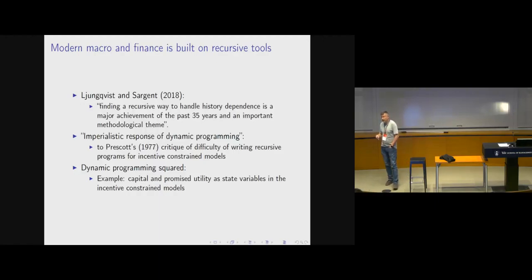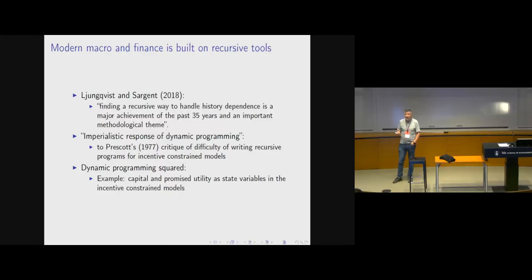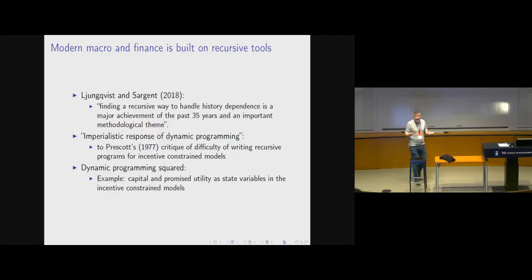Prescott, in his famous time inconsistency paper, argued that dynamic programming is not applicable to models with time inconsistency. A large part of the macroeconomist program was trying to find recursive representations even for models which seemingly have difficulty — like the models Prescott looked at — and I gave you the example with promised utility. If you put in all kinds of frictions and heterogeneity, you can think about most macro models as dynamic programming squared: wealth, promised utility, and a few other state variables that summarize the past.